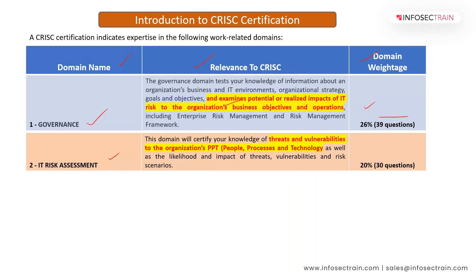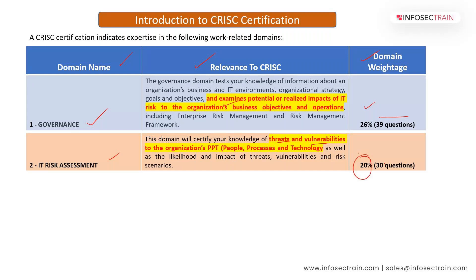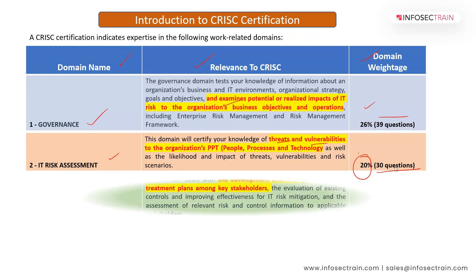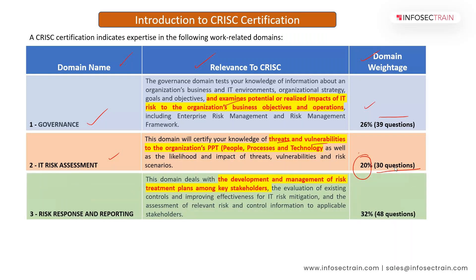Threats and vulnerabilities represent weaknesses to the organization's PPT — People, Process, and Technology. This domain also covers the likelihood and impact of those threats and weaknesses. The domain weightage for IT Risk Assessment is 20%, which is around 30 questions.